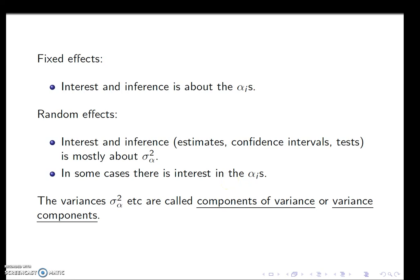So fixed effects, our interest and our inference is all about those alpha i's, those treatment effects. We're not going to be so concerned about the treatment effects when we have random effects models. We're going to actually focus in on the variance. So that variance contributed by our random effect. Sometimes when we do predictions, we will look at the alpha i's though. That's the only time I really look at them. Sometimes I'll look at a plot of, well, we'll see if I do that. But usually just if I do the predictions, I think about those alpha i's.